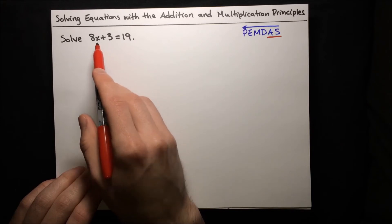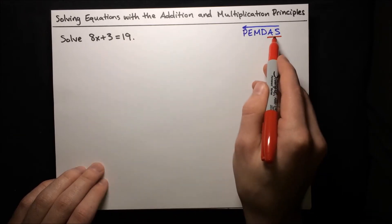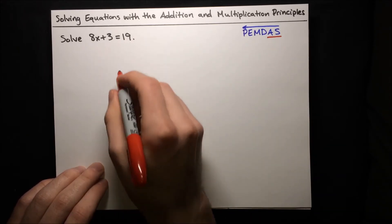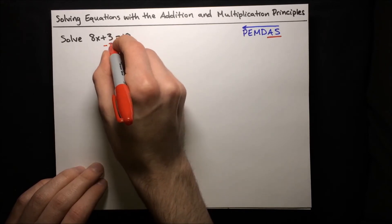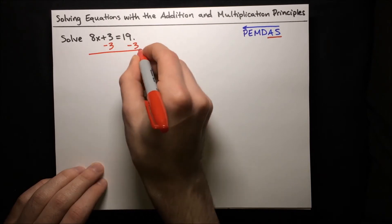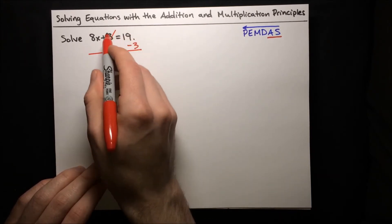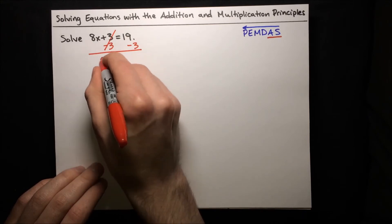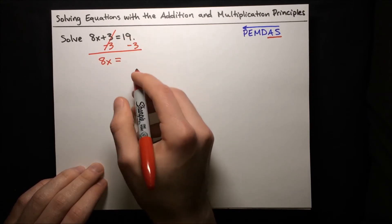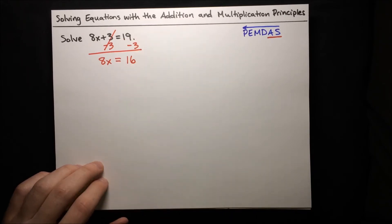We want to get the variable on one side and the constants on another side. So let's use subtraction to get rid of that 3 and move it to the other side. We can subtract 3 from both sides to cancel it out. The 3 will cancel with the negative 3, and we'll just have 8x equals 19 minus 3. Well, 19 minus 3 is 16, so 8x equals 16.